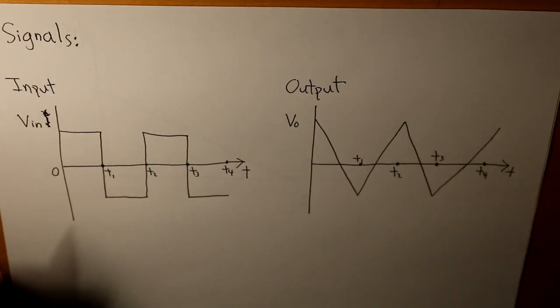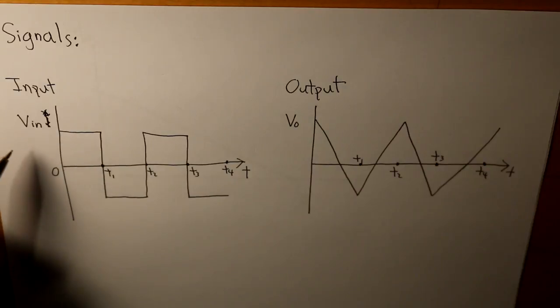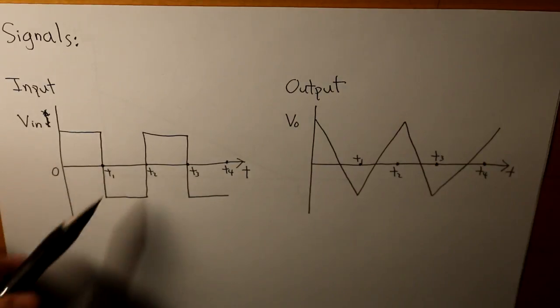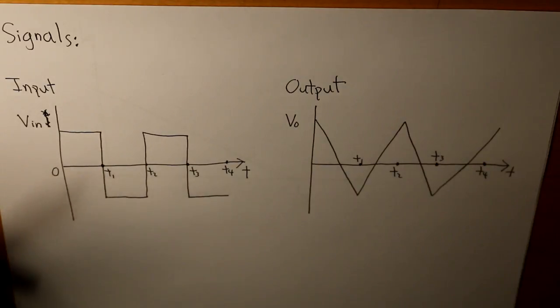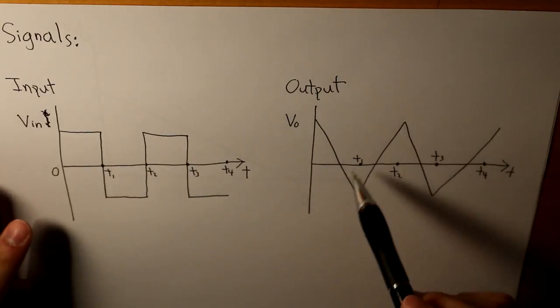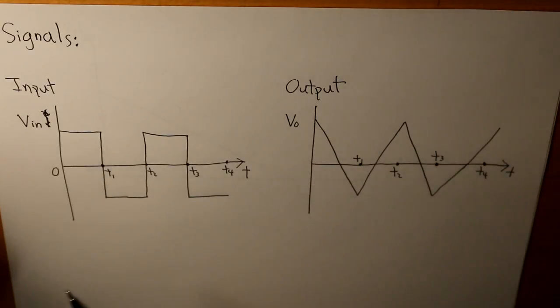Now let's move on to signals of what kind of waveforms or signals are going to be produced in an integrator. Initially, we have our input voltage Vin that is producing a square wave, just like this: t1, t2, t3, t4 for our input voltage. Basically, our output Vo is going to be like this, so it's essentially the integral of that.